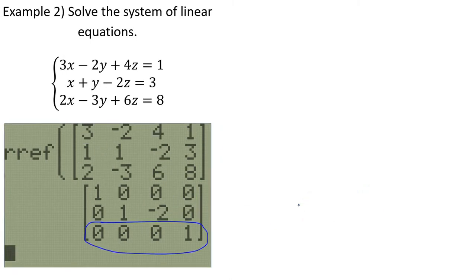Let's look at another one. Same thing, it's already been done for us. Let's interpret the result. And the key, I encourage, go look at that last row. What does this mean? 0x plus 0y plus 0z equals 1, or in other words, 0 equals 1. Well, how do we feel about that? That is not a true statement. So we simply say no solution.